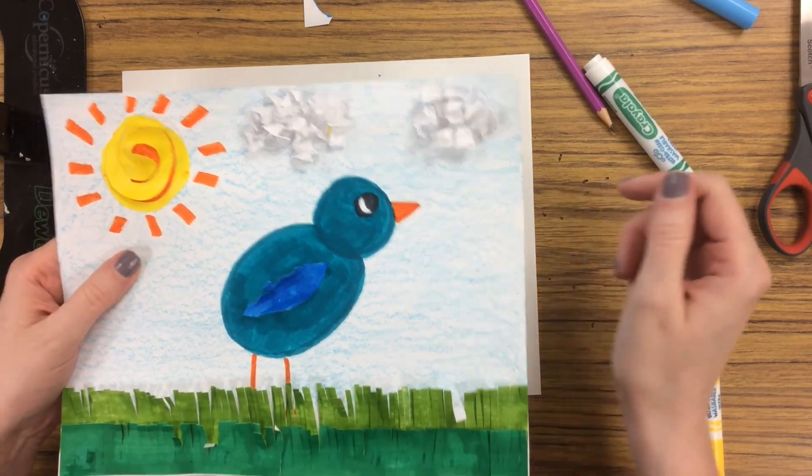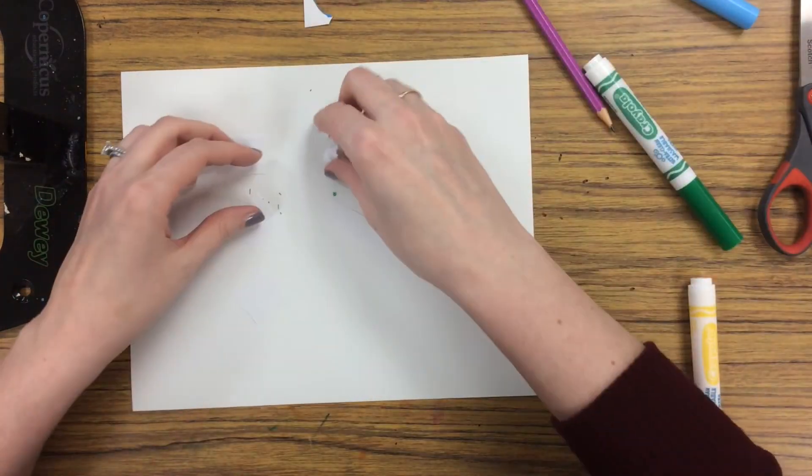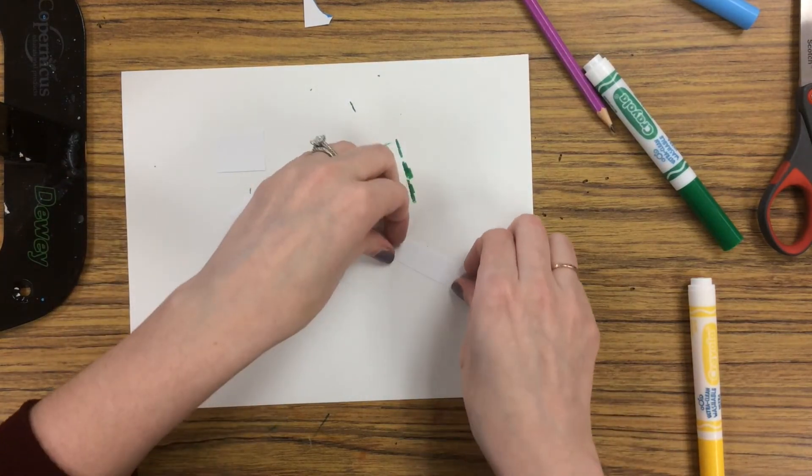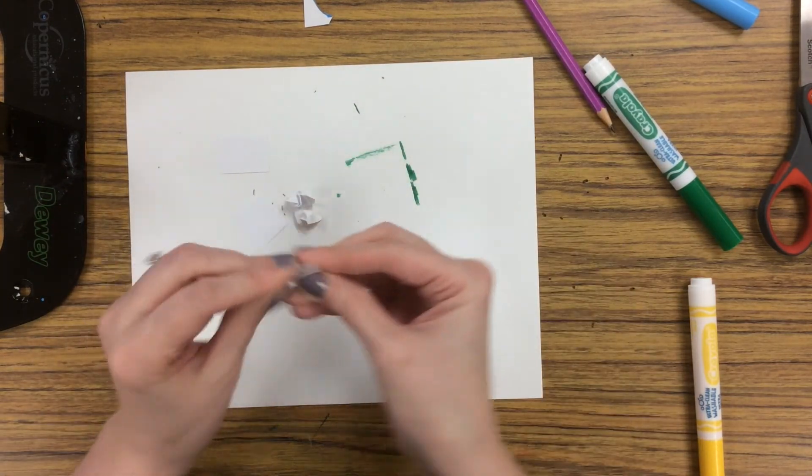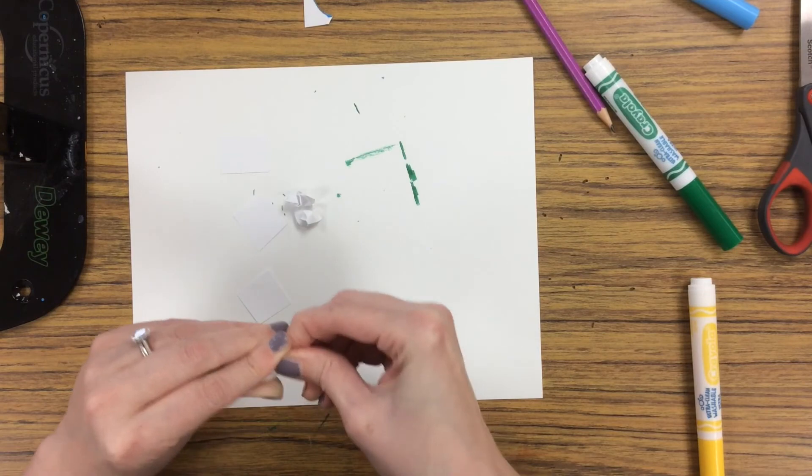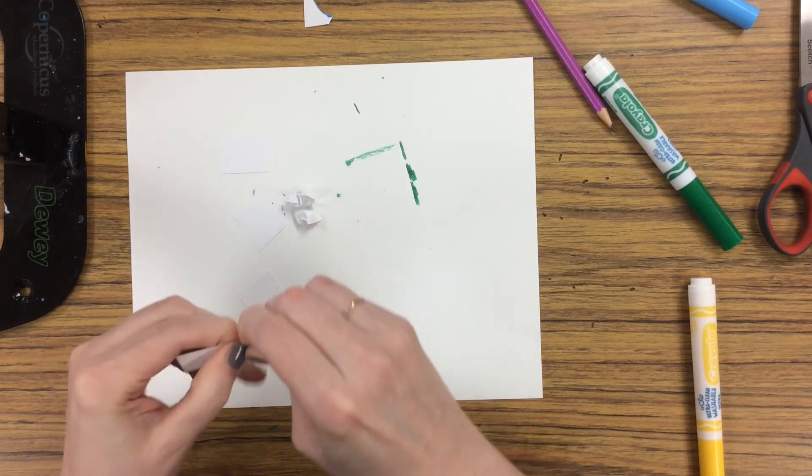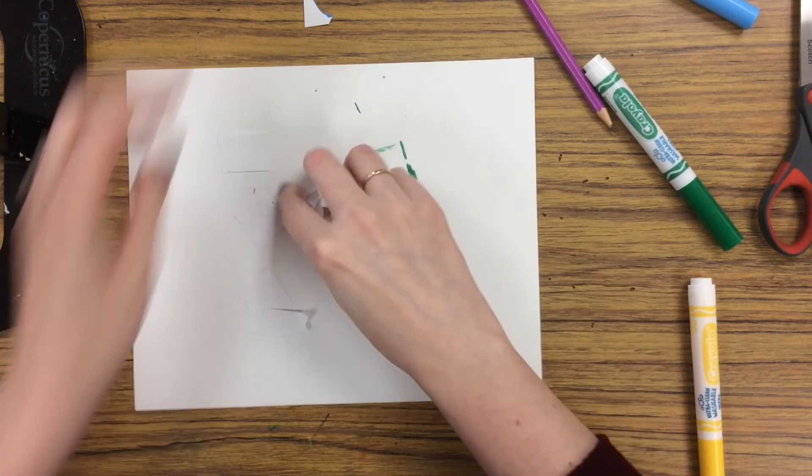This could also be a cool technique to use if you were drawing a bunny. You could put these maybe in the tail or if there's anything else that you wanted to look kind of fluffy in your drawing. So this is the crumpling technique.